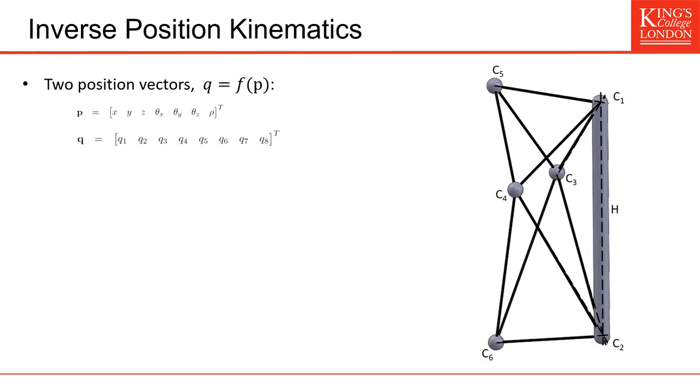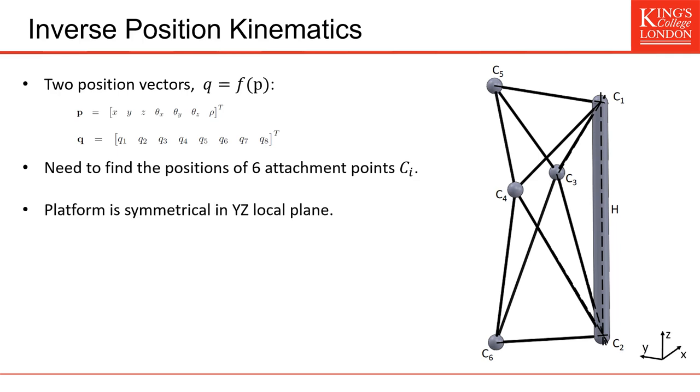So in order to control this robot, we want first to calculate the inverse position kinematics, which is the length of the cable as a function of the position of the platform. The position in this case is defined by x, y, z, the position of the middle of the handle, the orientation in the three axes, but also by the value rho, which represents the grasping. This is the seventh component of the vector P. And from this vector, we want to calculate the vector Q, which has all the length of the cables. So we need actually to find the position of the six attachment points, C1 to C6. The platform is symmetrical in this y, z local plane, so that will make the calculation easier.